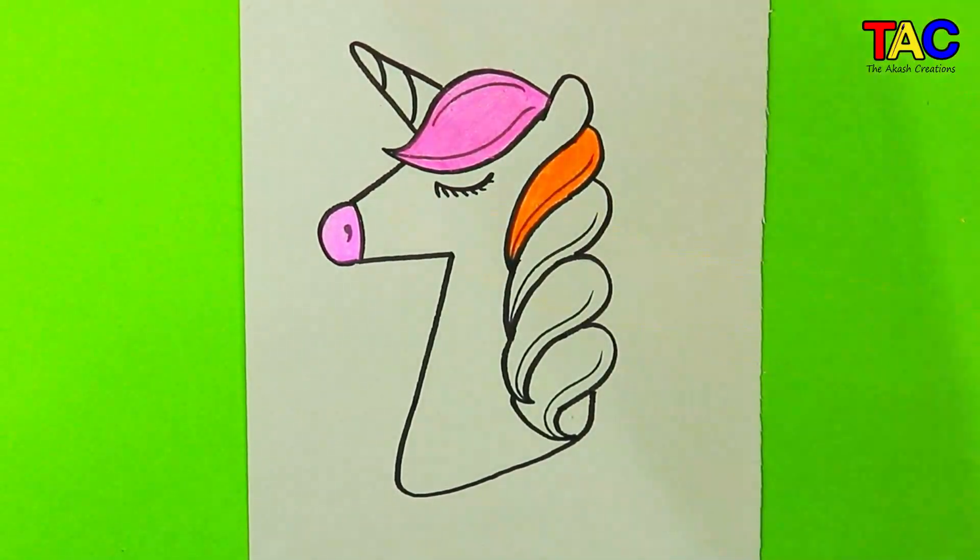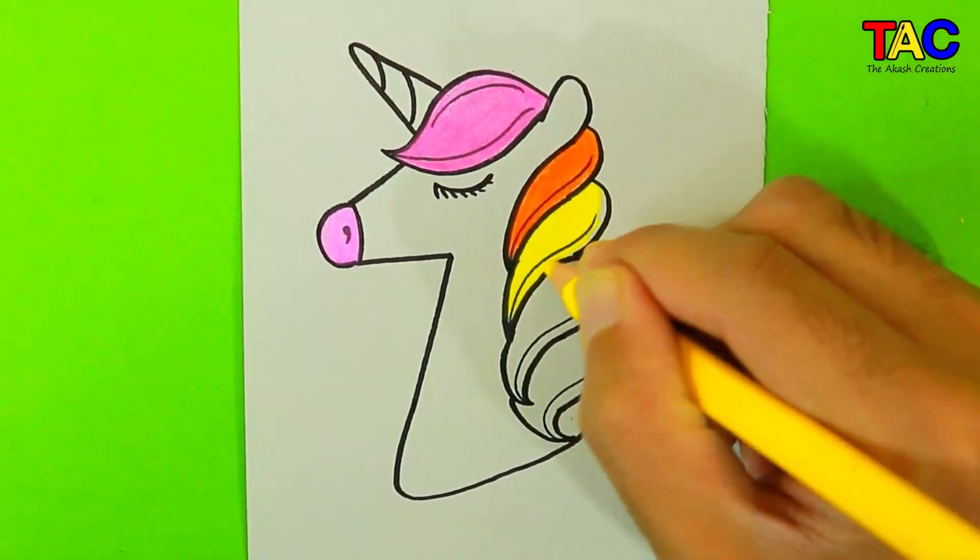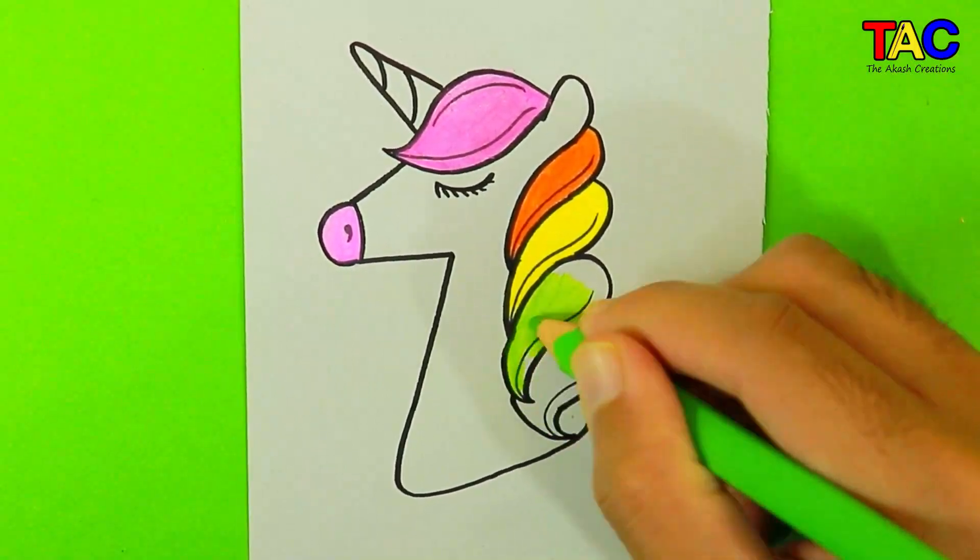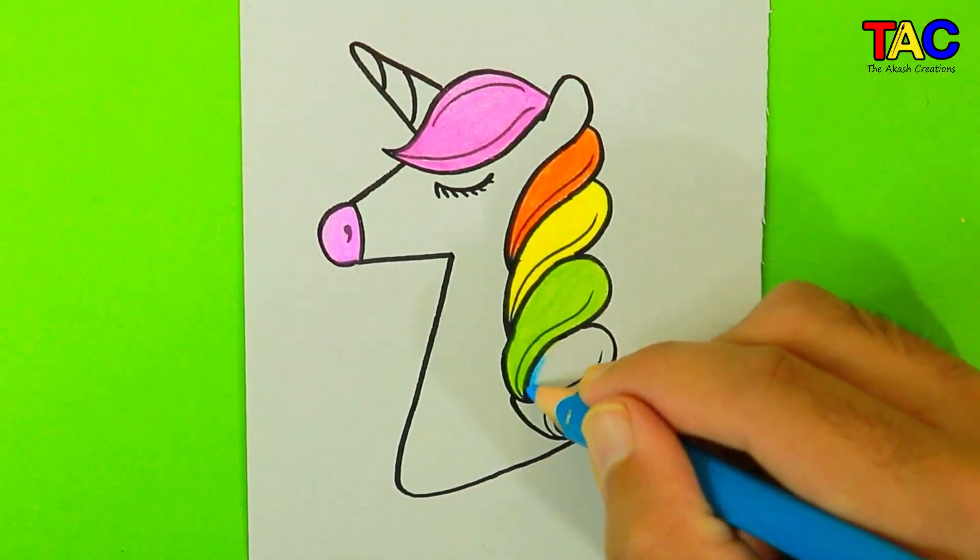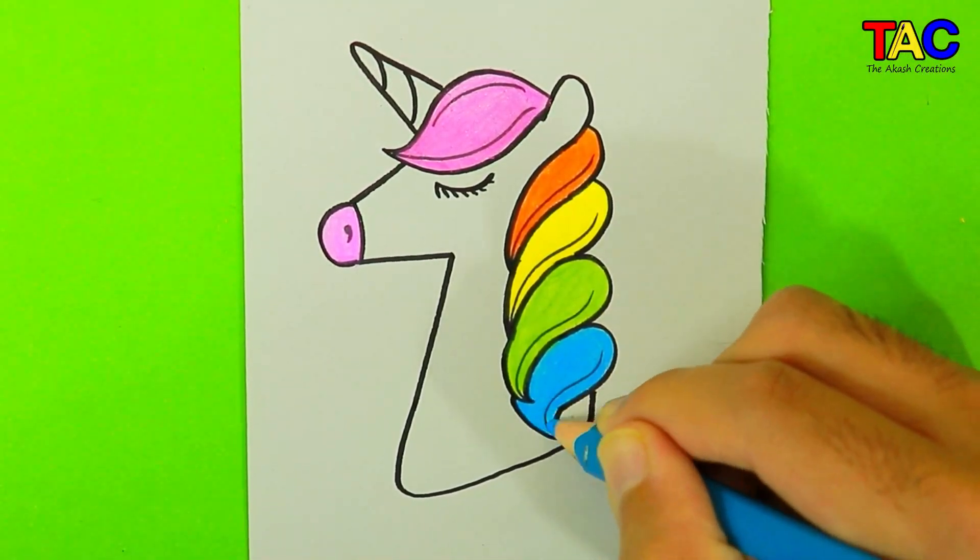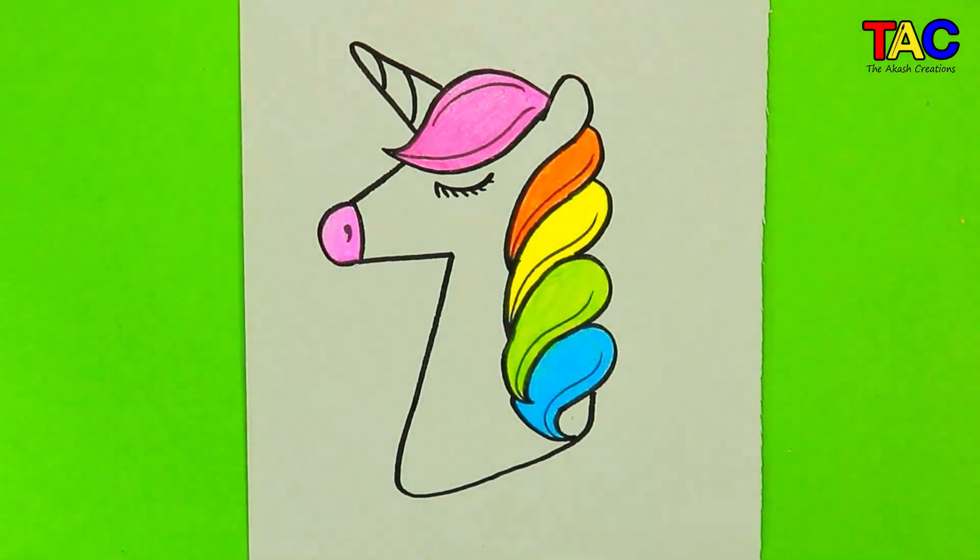In European literature and art, the unicorn has for the last thousand years or so been depicted as a white horse-like or goat-like animal with a long straight horn with spiraling grooves, cloven hooves, and sometimes a goat's beard.